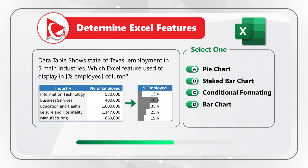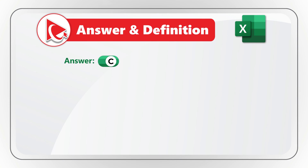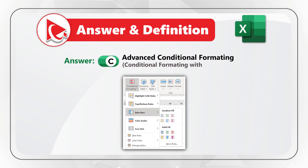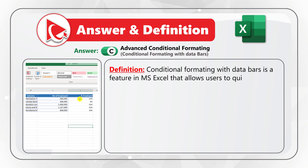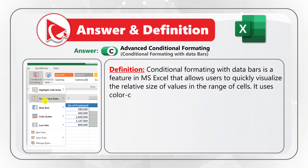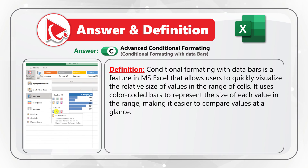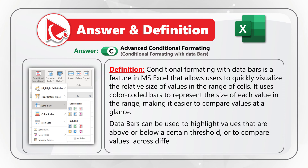You typically get no more than 5 to 10 seconds to answer those types of questions on the test. The correct answer is choice C, advanced conditional formatting — specifically, conditional formatting with data bars. Data bars is a feature in Microsoft Excel that allows users to quickly visualize the relative size of values in a range of cells. It uses color-coded bars to represent the relative size of each value, making it easier to compare values at a glance. Data bars can highlight values above or below a certain threshold or compare values across different categories.